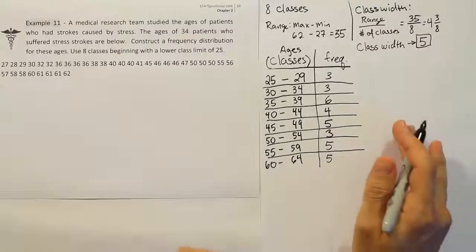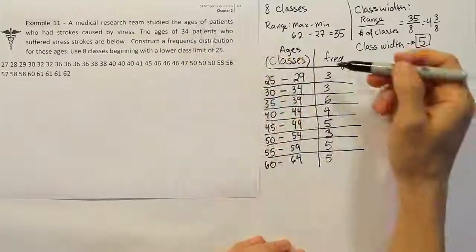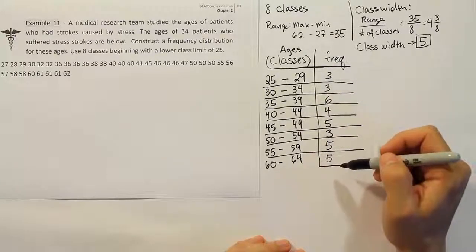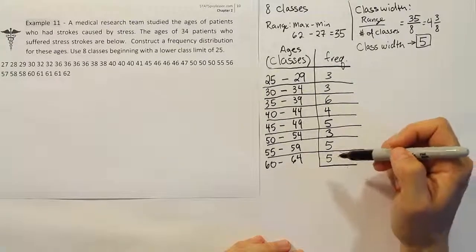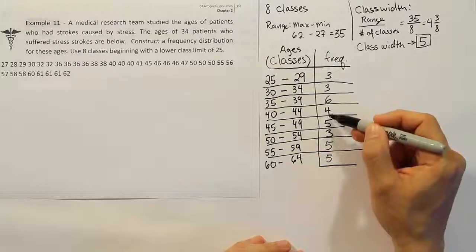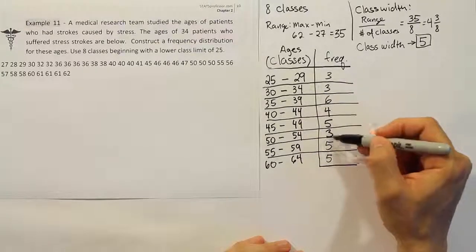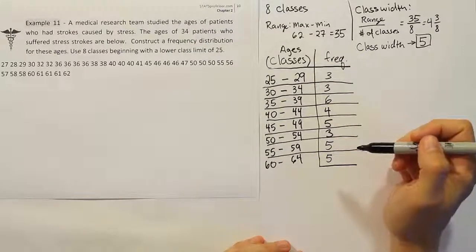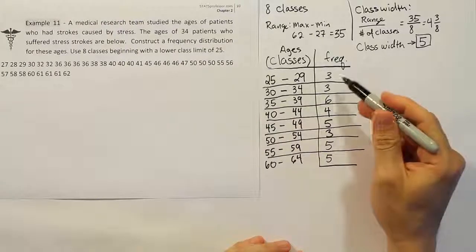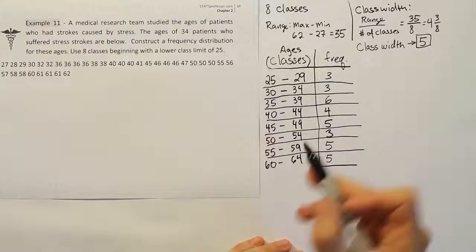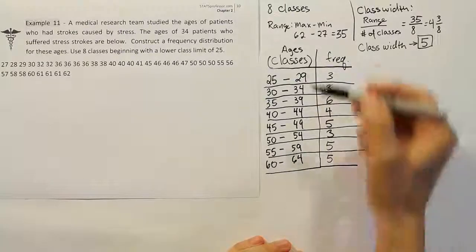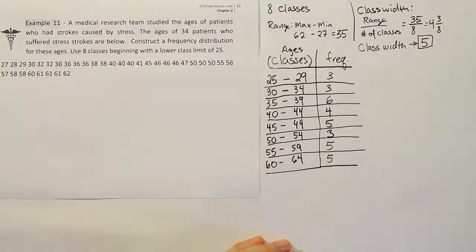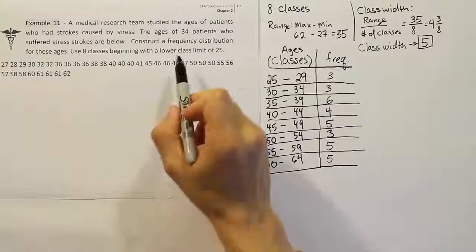As a check, we want to make sure the frequencies add up to 34 — the total number of patients. Adding them up: 3+3=6, plus 6 is 12... 10 and 10 makes 20, then 28, plus 6 more gives us 34. The total is 34, so we know we did it right. We now have our completed frequency distribution with all classes and their corresponding frequencies.